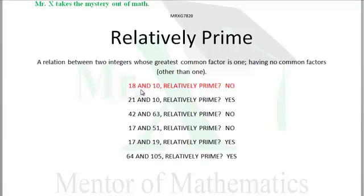Alright, 18 and 10, are they relatively prime? No, they both have 2 as a factor. So any time you have two even numbers, they will not be relatively prime. No common factors other than 1. 18 and 10 are both even, they won't be relatively prime, so that's a no.